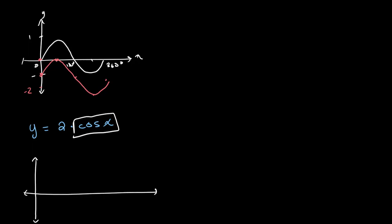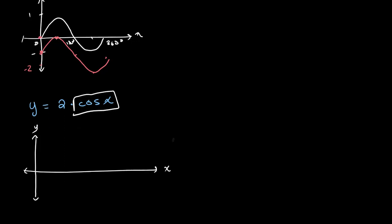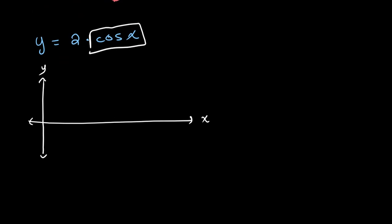Here's the axis, this is x, this is y. It'll look something like this. And this is 1, this is minus 1, this right here is 180 degrees, 90 degrees, 270 degrees, and 360 degrees.